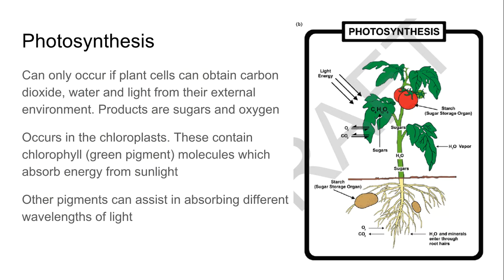Photosynthesis can only occur in plant cells if they can obtain carbon dioxide, water, and light from their external environment. Once they obtain those, they go through a reaction which produces sugars and oxygen. This occurs in the chloroplasts, which contain chlorophyll — a green pigment that absorbs energy from sunlight.